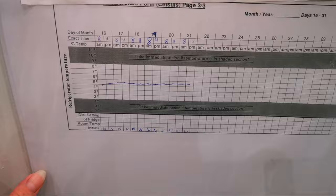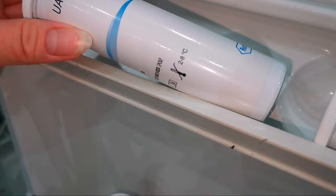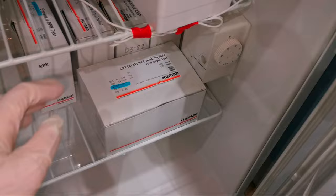This is the temperature monitoring sheet. Now let's see what's in the ref. This is the uric acid strip and the other one for control.